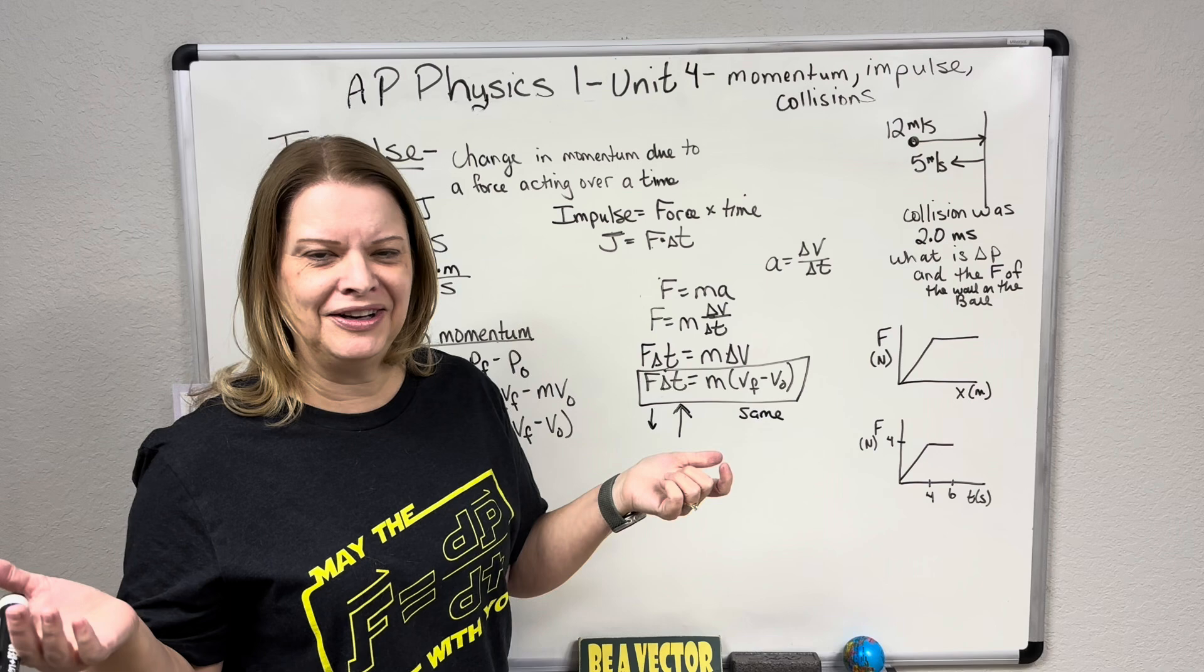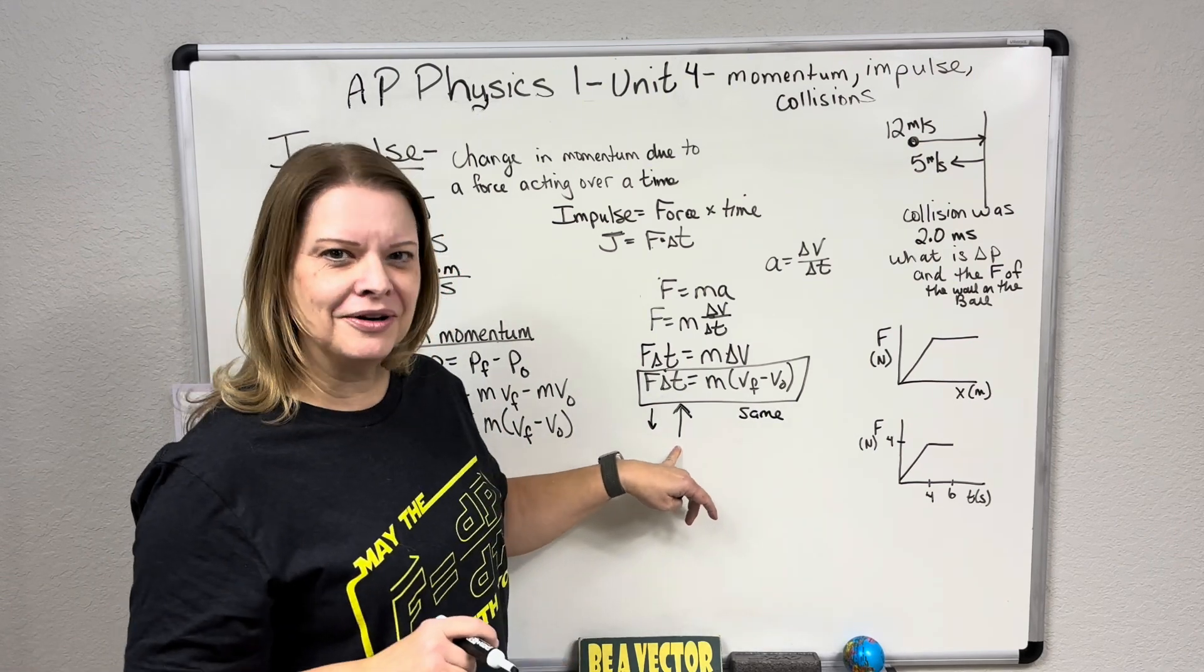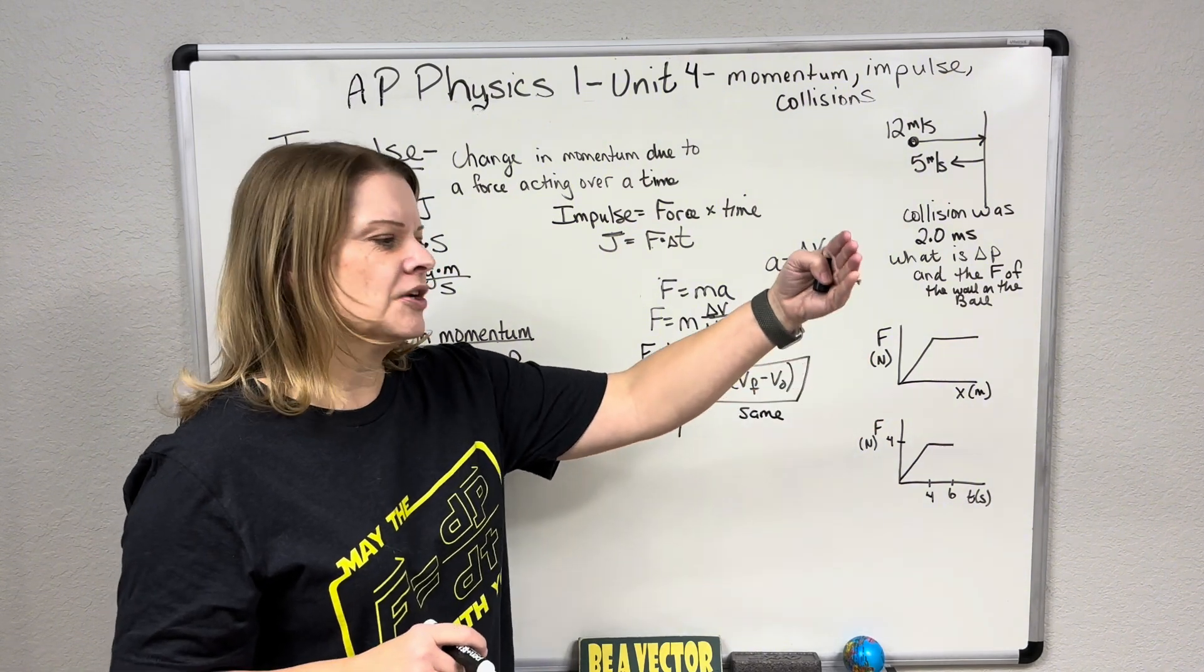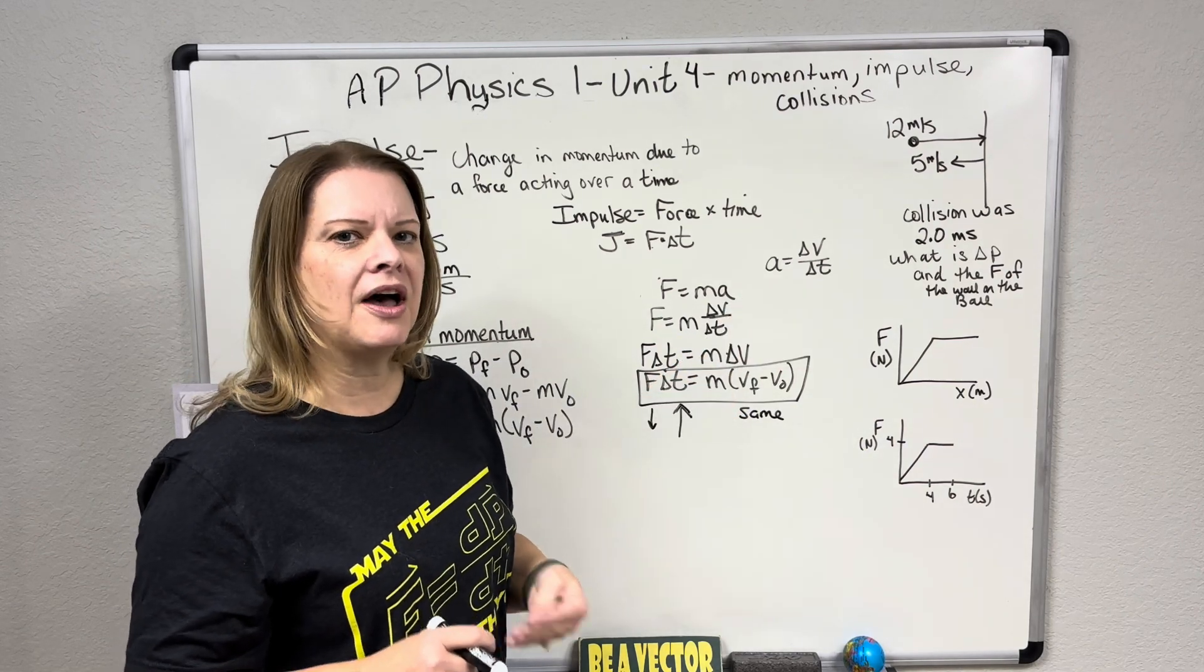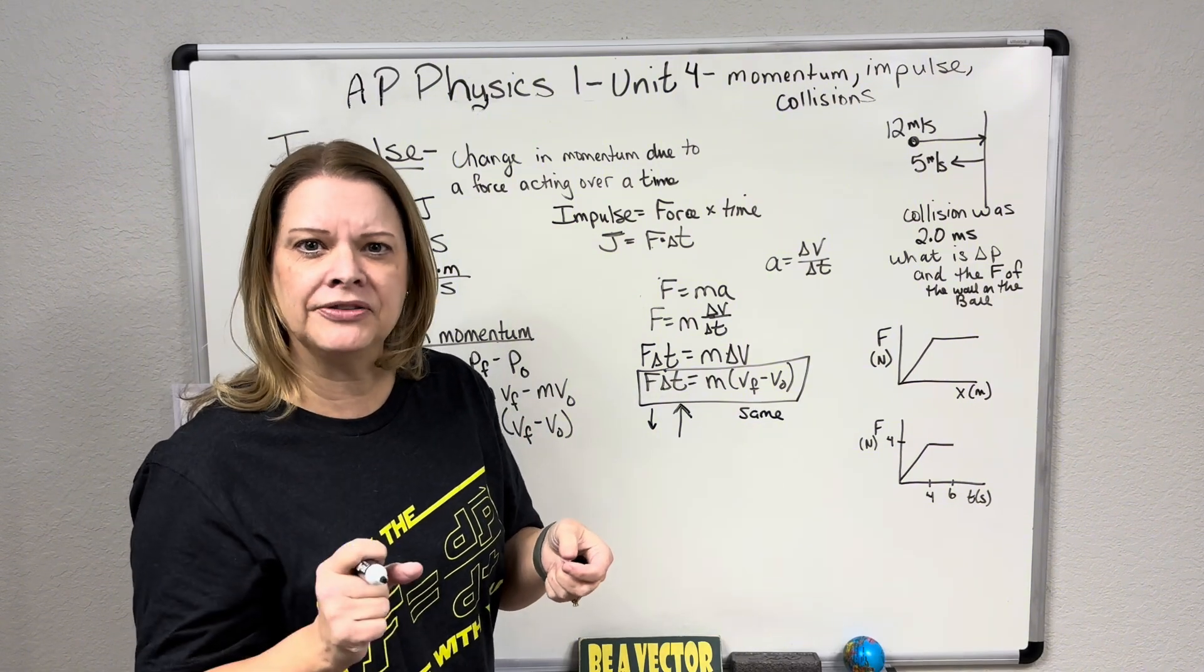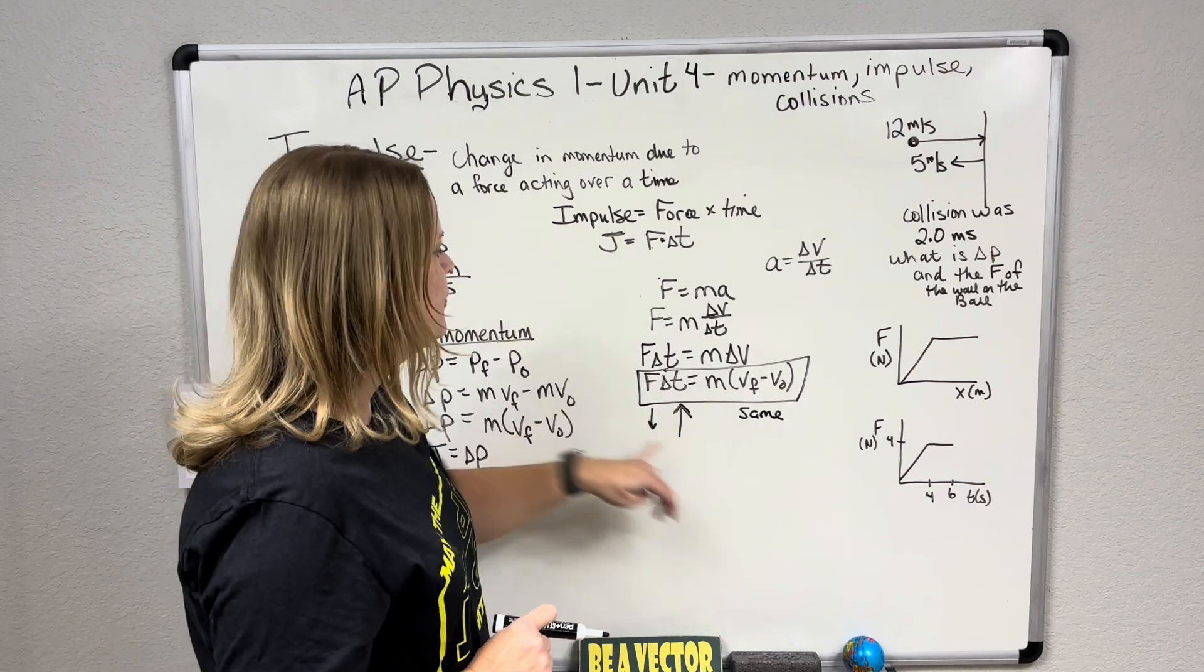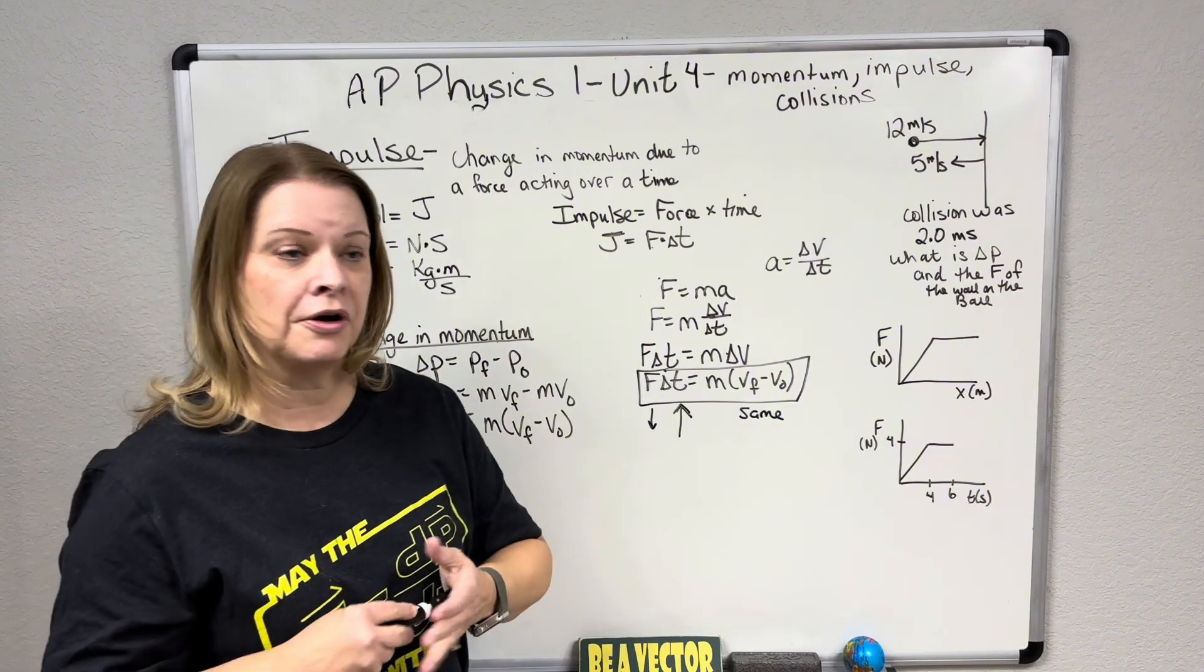Also, the crumple zone in the car. You hear some of the older generations say they don't make cars like they used to. They used to never bend in a car accident. That's a good thing, because we would rather the car bend than our bodies, right? So if they can increase that crumple zone, as it crumples, the car crumples, it's taking more and more time for it to stop, versus just hitting something, not bending at all, and stopping in a split second. So you're increasing the time of that car to stop to decrease the force on your body. So those safety engineers are doing an amazing job out there on keeping us safe in our cars.